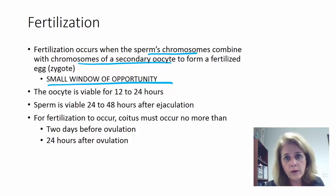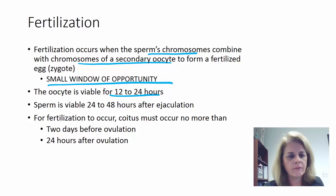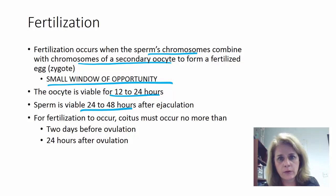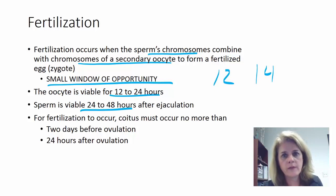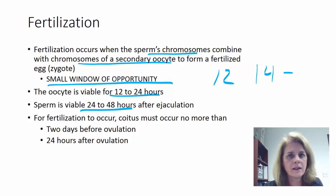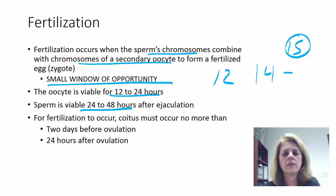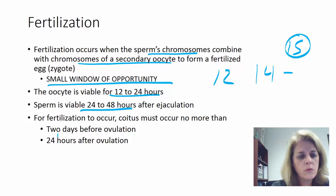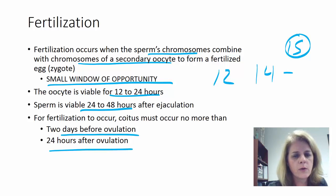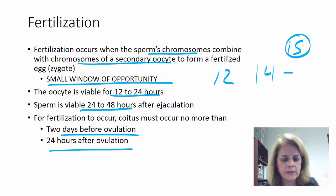The oocyte is viable once ovulated for about 12 to 24 hours. Sperm are viable for 24 to 48 hours. So if ovulation is on day 14, intercourse starting on day 12 gives the sperm two days to reach the egg, and fertilization could occur up to day 15 or 16. For fertilization, intercourse needs to occur no more than two days before and 24 hours after ovulation.